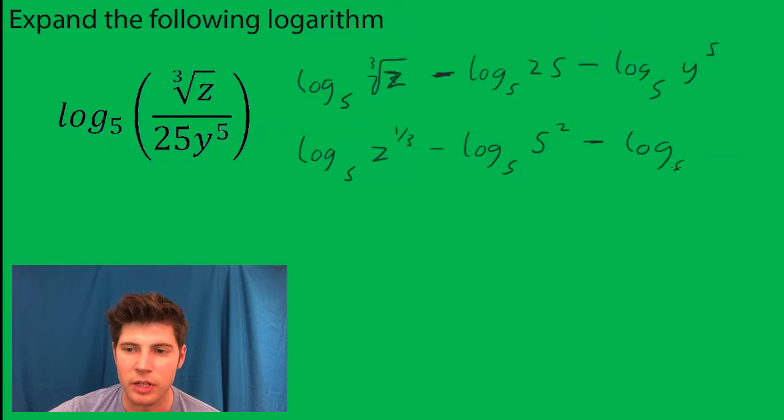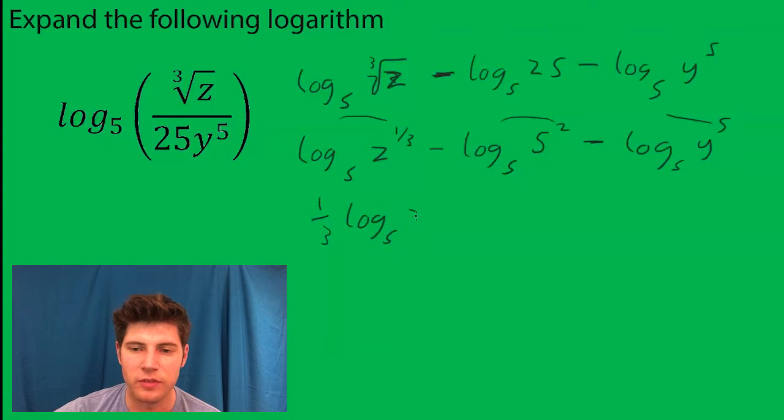And this one's already pretty clean. Now we can bring each of these exponents to the front. So this would be one-third log base 5 of z, minus 2 log 5 of 5, minus 5.